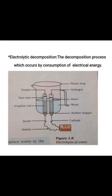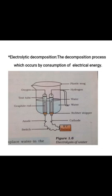The second type of decomposition is electrolytic decomposition, where we need electricity to decompose the substance. When we pass electricity through water, it converts into hydrogen and oxygen. In a plastic mug, you can make holes at the bottom and fix electrodes connected to a battery. When we switch on the battery, bubbles start coming out from the electrodes. We collect those bubbles in test tubes — one test tube will contain hydrogen gas and another will contain oxygen gas, confirming decomposition of water.